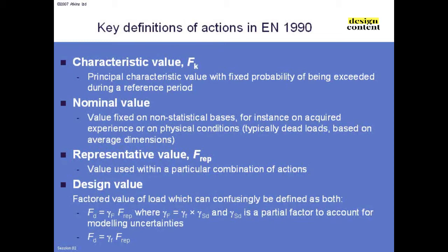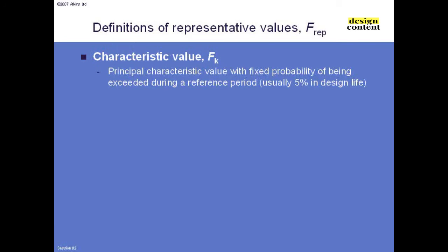The design value is basically the representative value multiplied by the load factor gamma_F. Gamma_F is made up of gamma_f times gamma_SD, where gamma_SD is a partial factor to account for modelling uncertainties — very similar to how gamma_F3 was used previously. In the Eurocode you will never see gamma_SD explicitly because it's hidden inside gamma_F; you'd only separate it out for non-linear analysis. Generally, you will only see gamma_F.